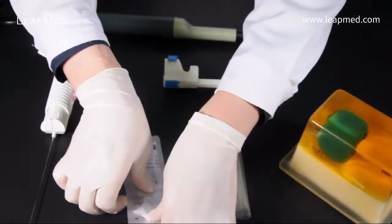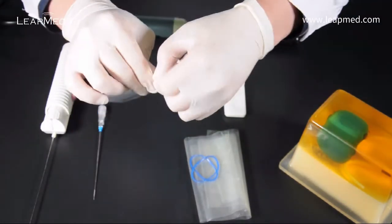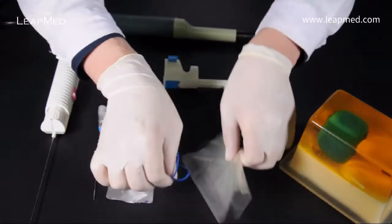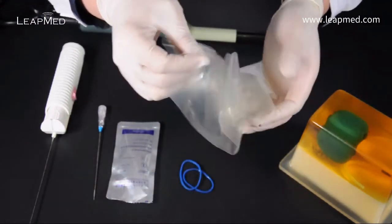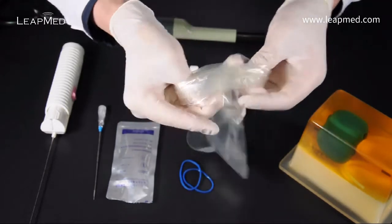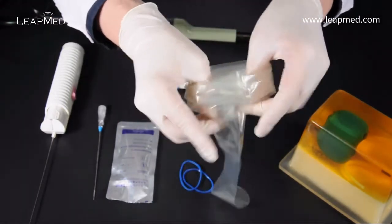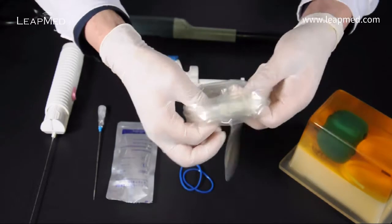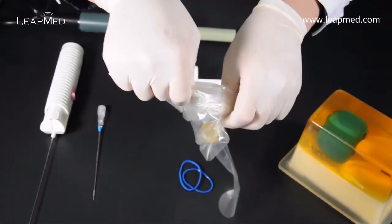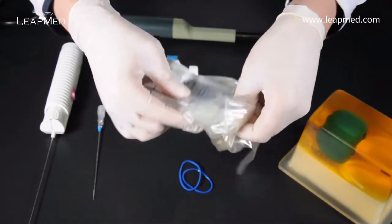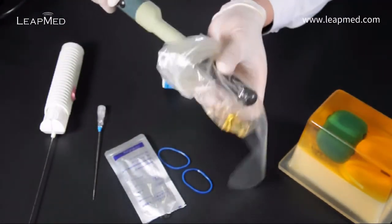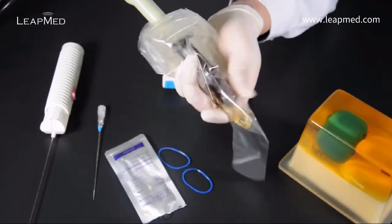First we open the sterile gel and roll the cover. We then apply gel into the cover and put the probe in.